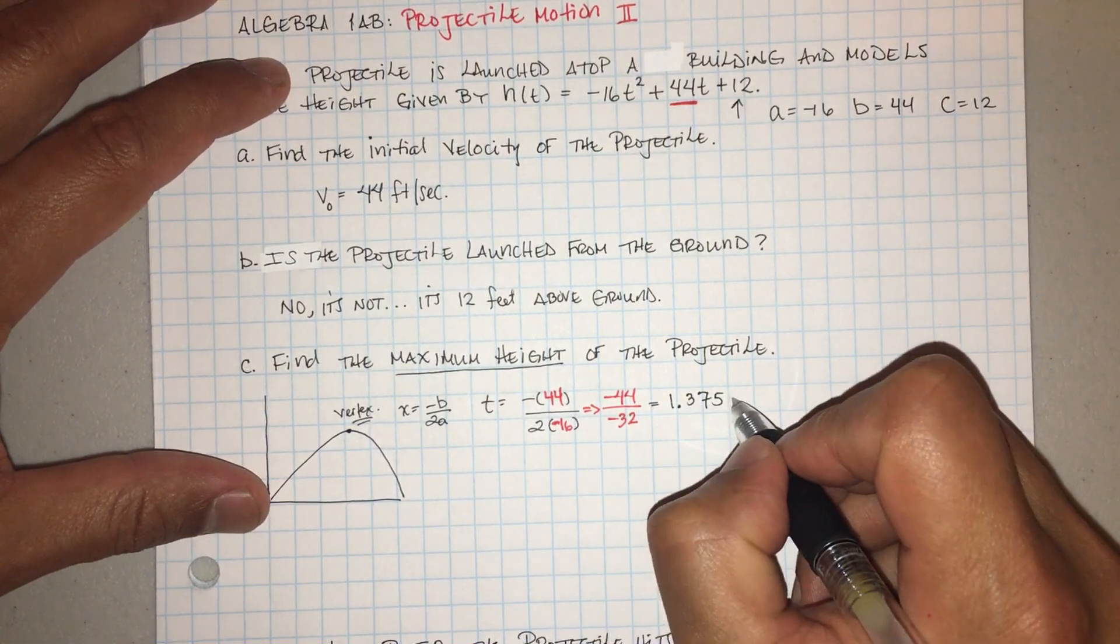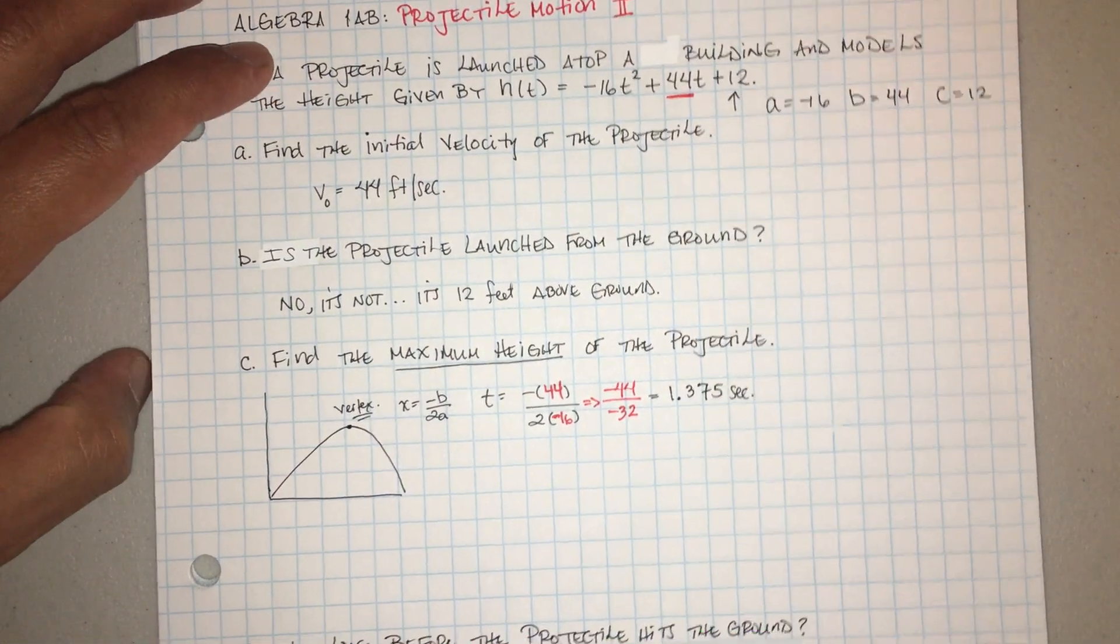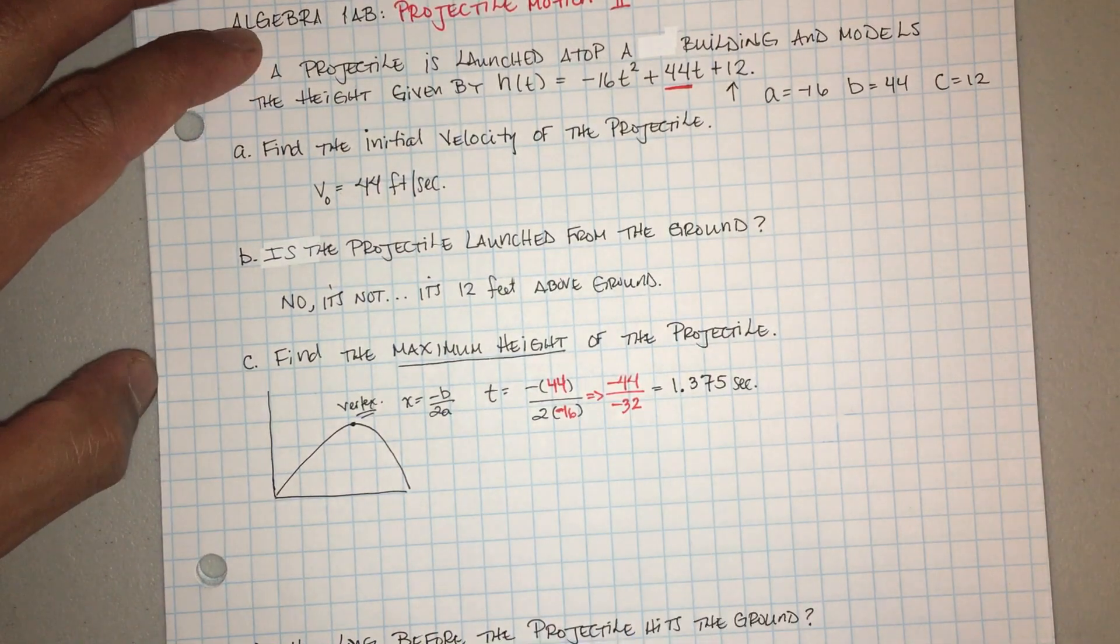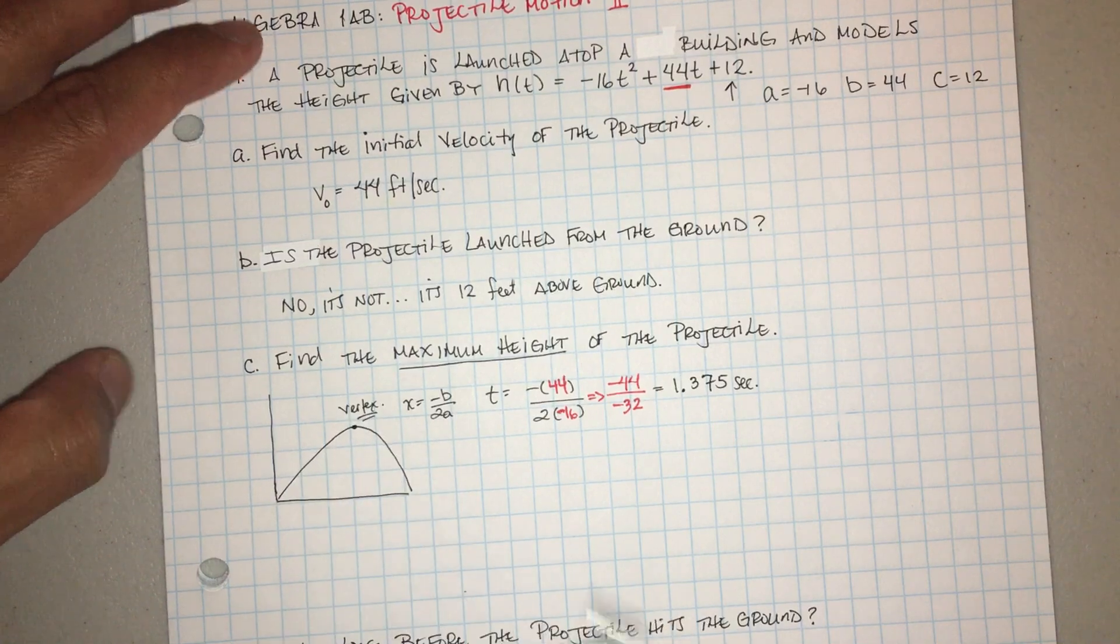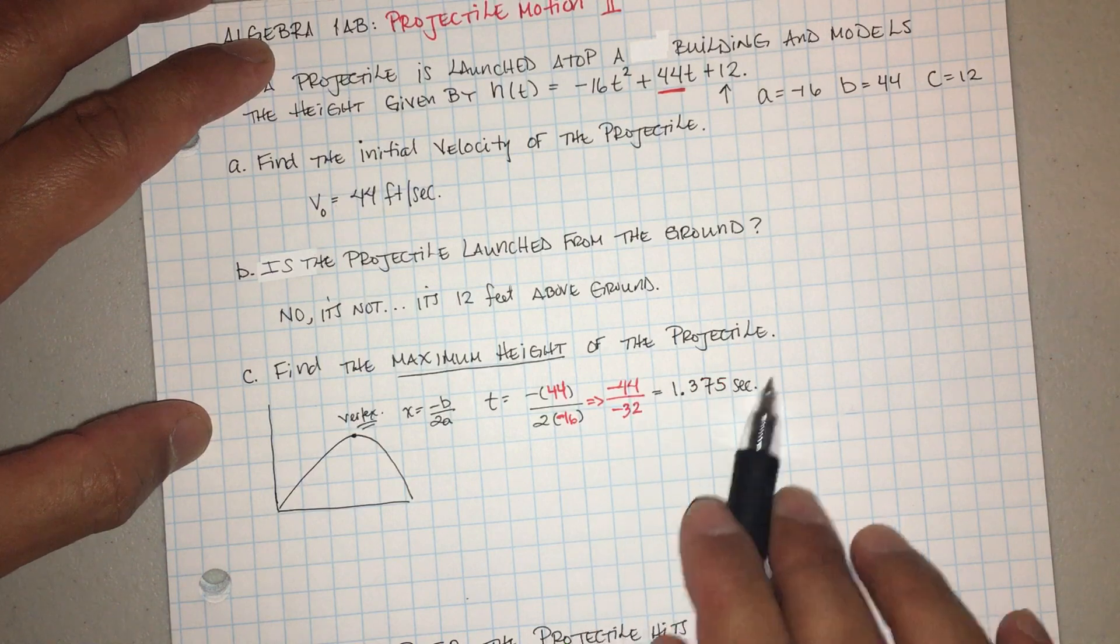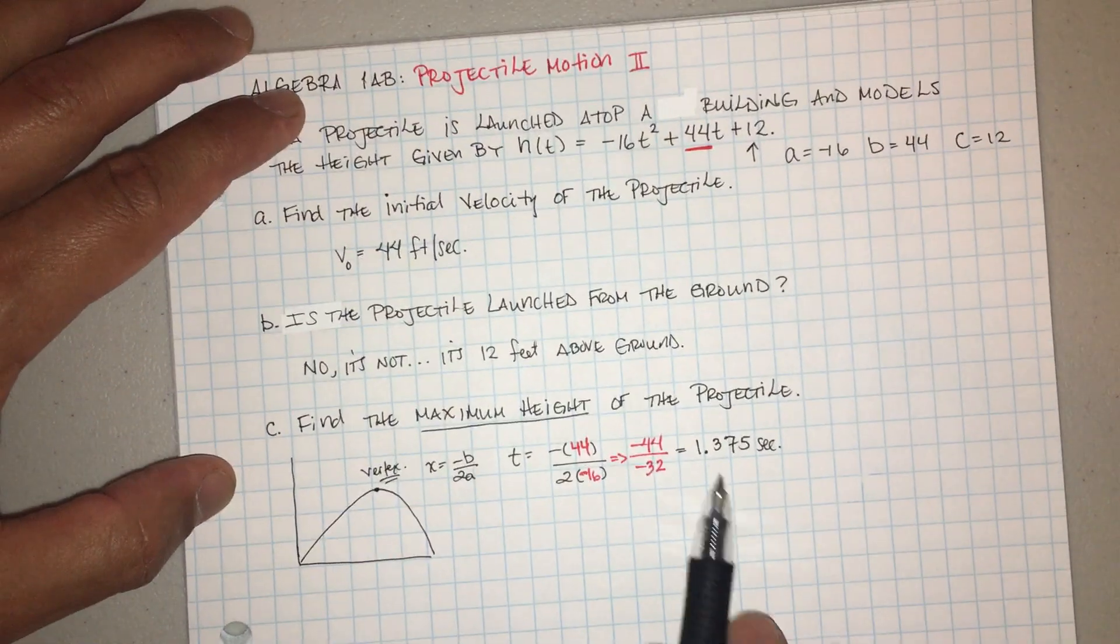So at t equals 1.375 seconds it's going to reach the highest point. Entonces, el momento de 1.375 segundos, este proyectil va a llegar a la altura más alta. Well, how do you find it? Because see, that's not the maximum height. Esa no es la altura, la altura máxima.